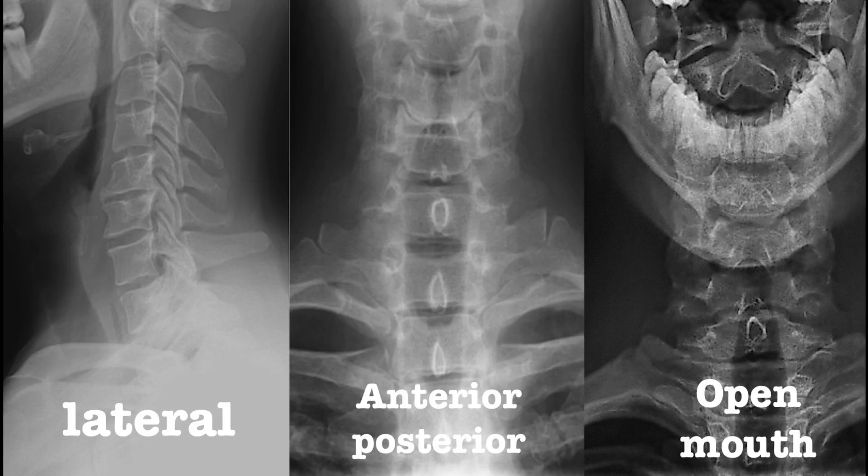There are at least three views that one should request for, and these include the AP (anterior-posterior) view, lateral view, and the odontoid, or open-mouthed view.